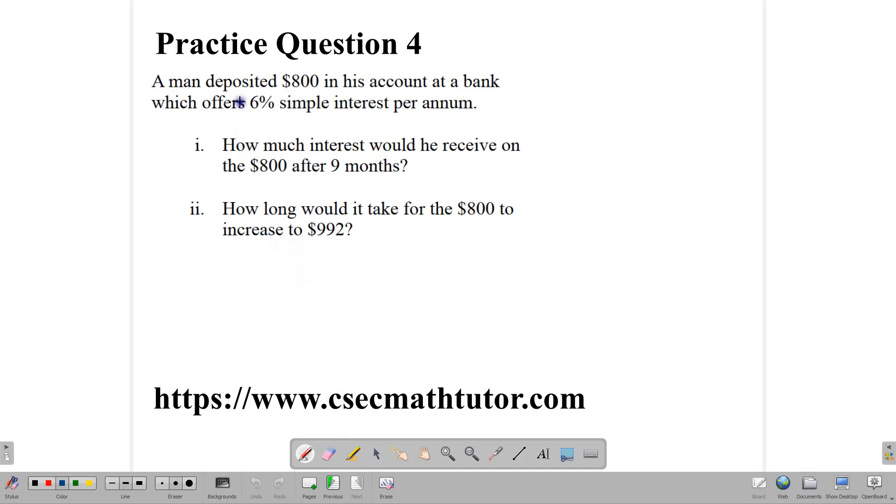Let's look at our final example here. Using the same formula, a man deposited $800 in his account at a bank which offers 6% simple interest per annum. Part one says how much interest would he receive on his $800 after nine months. So we note our formula again, part one. Our formula is PRT over 100 equal to interest. Now, in this question, our principal is 800. Our rate is 6%. And our time is nine months. Now, you can write that nine months as 9 over 12 because it's not a full year. So we could write it this way, over 100. And when we do that calculation, you would get the interest and do your calculations and get your answer.